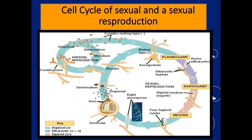Life cycle of sexual and asexual reproduction: you can see here in the diagram. Asexually, conidial spores are produced and they disperse with the help of air and produce new structures. In sexual reproduction, two parents are involved — one acts as male and another as female. Both fuse together, form a zygote, then an embryo, and produce the sporophytic body. The sporophytic body produces spores, which disperse with the help of wind and produce the gametophytic body.